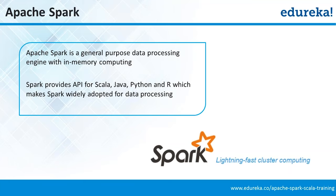Spark provides APIs for Scala, Java, Python, and with the latest releases like 1.4 and 1.5, Spark has built very efficient APIs — for example, DataFrames and functions — which allow you to leverage R functions running on top of Spark.